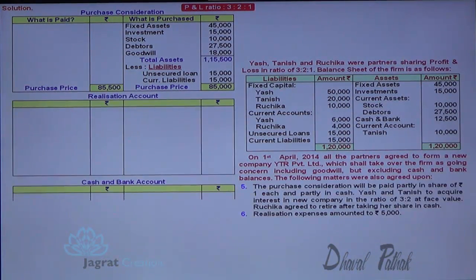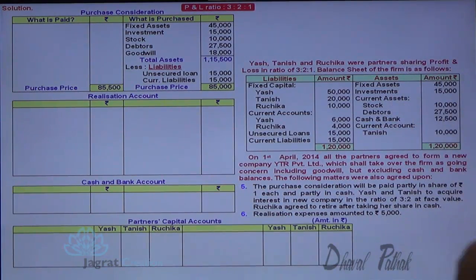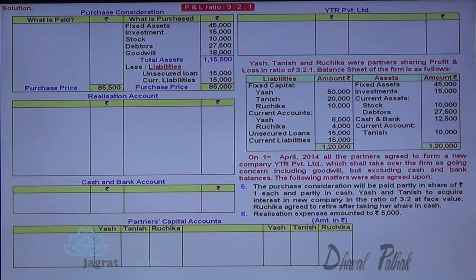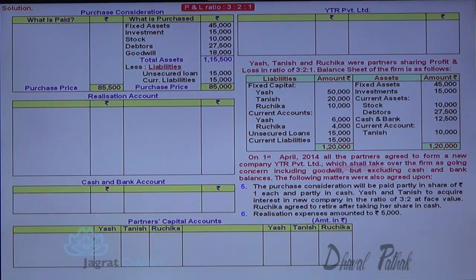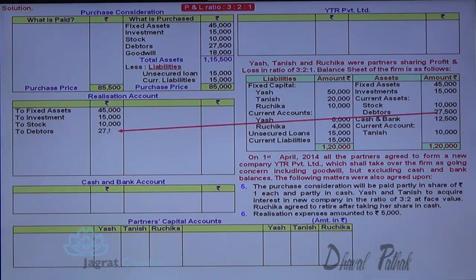I prepare the realization account, cash and bank account, and capital accounts along with the new company account. All assets to be realized are transferred to the debit side of the realization account. Fixed assets, investments, stock, and debtors are the debit balances transferred to the realization account. The journal entry is: realization account debit to fixed assets 45,000, to investment 15,000, to stock 10,000, to debtors 27,500.